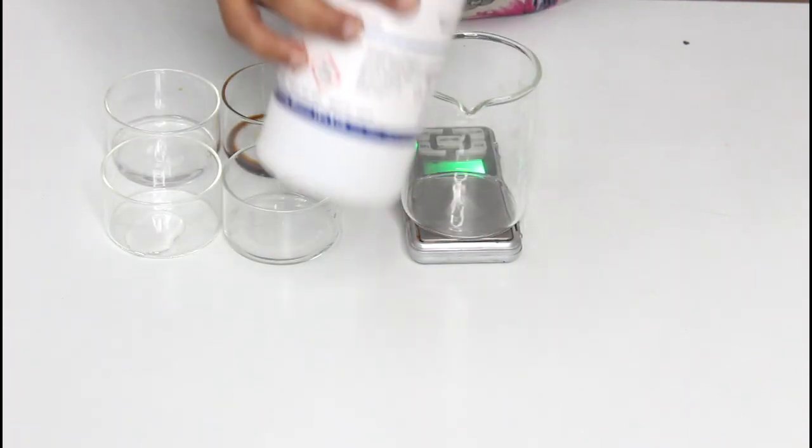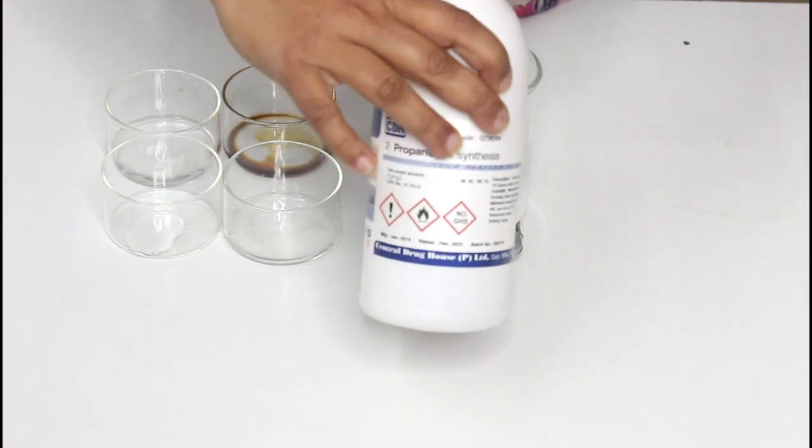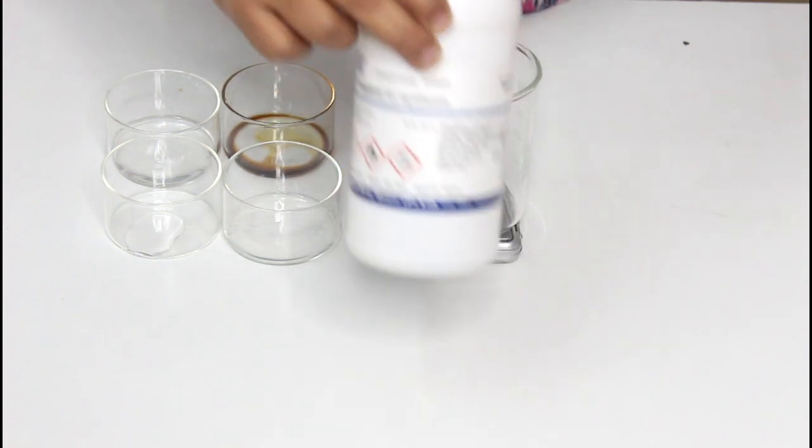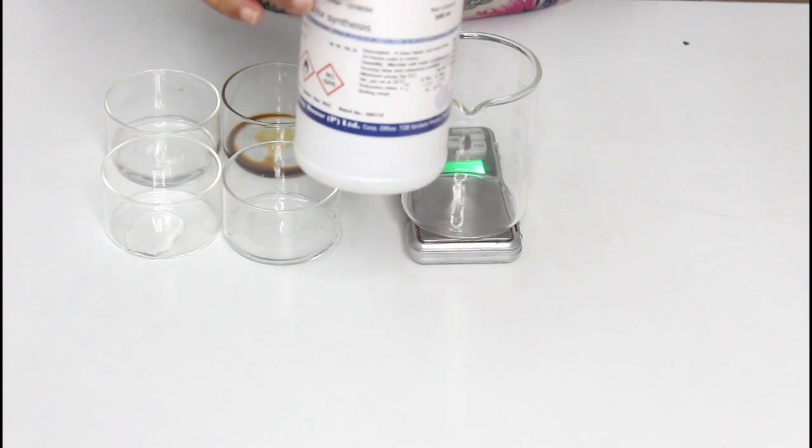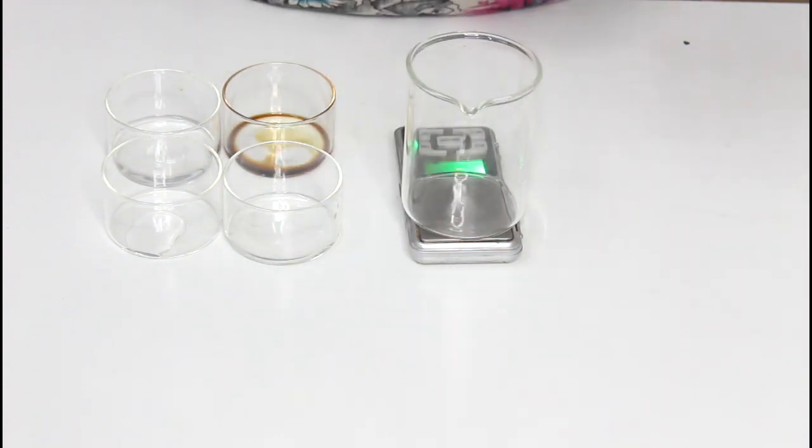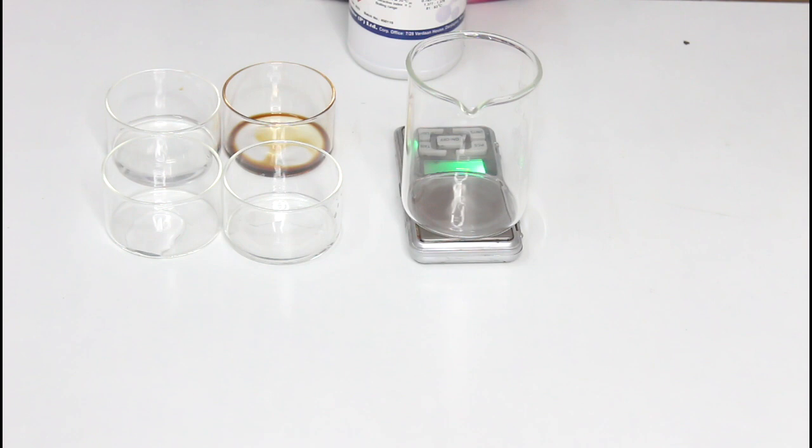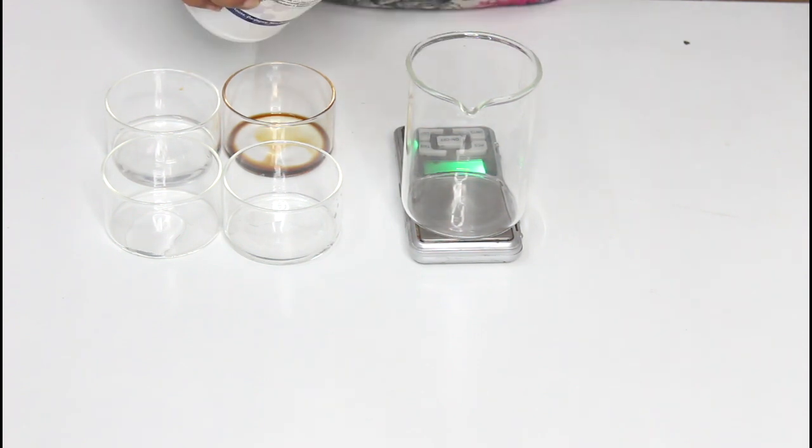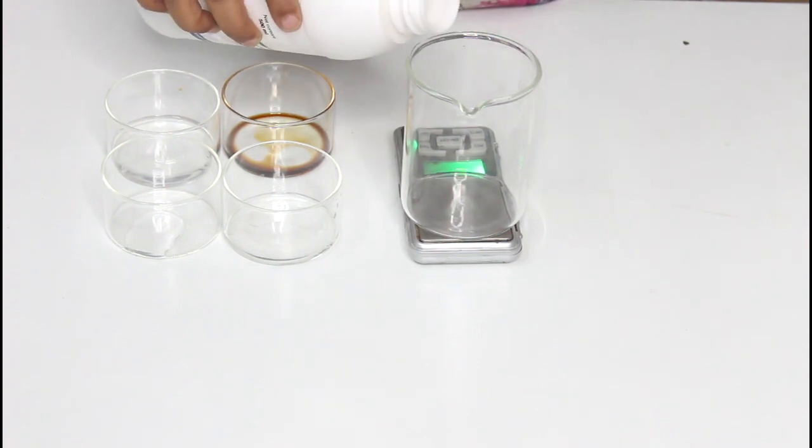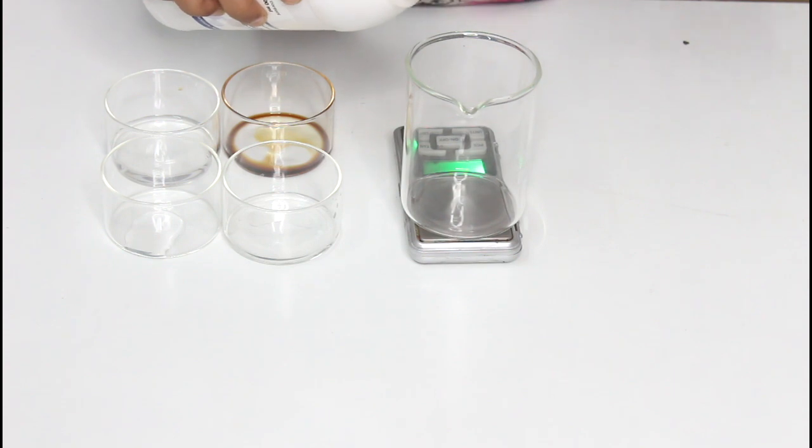So first let us measure our isopropyl alcohol. This is 99% isopropyl alcohol which I have bought from a scientific equipment shop. You can get this at your nearest chemist or surgical shop. Now for this recipe I need 37.55 grams of this isopropyl alcohol.